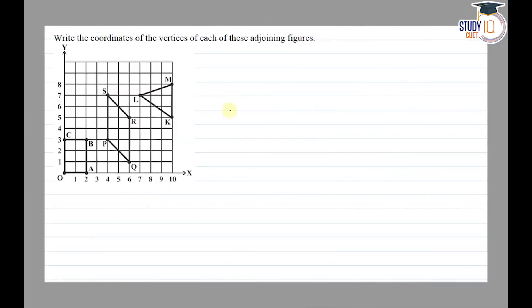Hello everyone, this question appears in Class 8 NCERT Chapter on Introduction to Graphs. This is the third question of Exercise 15.2. The question asks to write the coordinates of vertices of each of these adjoining figures.